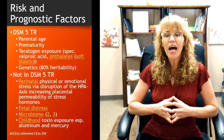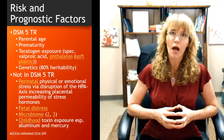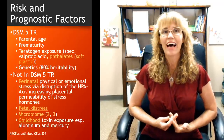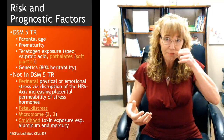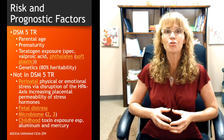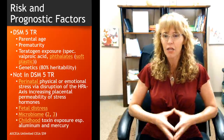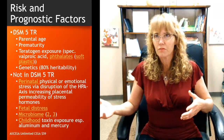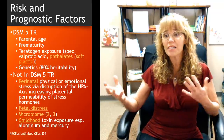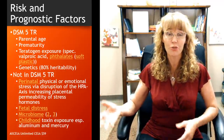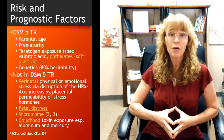Childhood toxin exposure is another risk factor — aluminum and mercury are the most common toxins associated with the development of ASDs. This parallels historical concerns about lead in paint, which caused toxicity in children who ingested it.